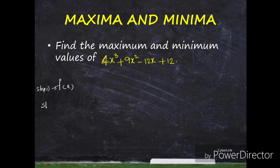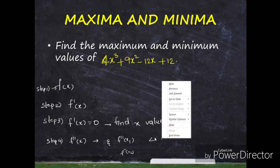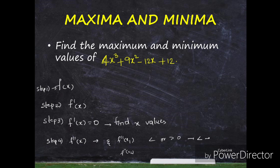Step 1: write the function f of x. Step 2: find f dash of x, the derivative of the function. Step 3: set f dash of x equal to 0. Let the solutions be x1 and x2. Step 4: check f double dash of x at x1 and x2 — if it is less than 0, the function is maximum; if f double dash of x is greater than 0, the function is minimum.